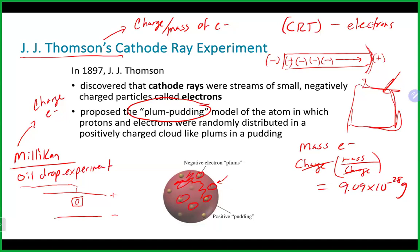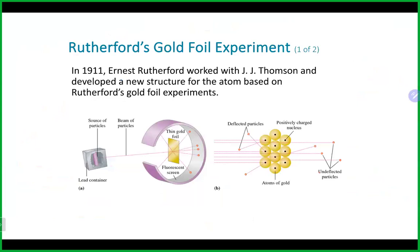The Plum Pudding model proposed that since electrons are negatively charged and the atom is neutral, the atom must have some positive component to balance them out. Thompson suggested the positive charge was spread out diffusely over the entire sphere of the atom, with negatively charged electrons embedded inside — like raisins in a pudding. The pudding represents the spread-out positive charge and the raisins represent the electrons. This was an early model, until Rutherford's Gold Foil Experiment came along.